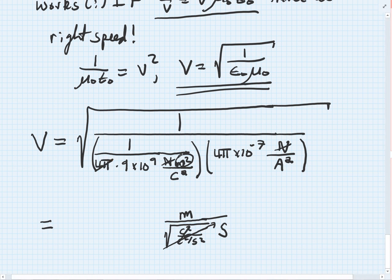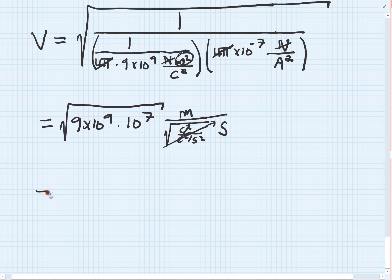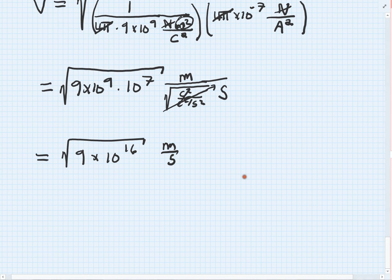Now, what speed is it? The 4 pi's cancel perfectly. That is good. The 9 times 10 to the ninth will do a double flip on top. So I'm going to have square root of 9 times 10 to the ninth. And then 10 to the minus seventh, when I invert that, gives me another factor of 10 to the seventh. So when I simplify this, I've got square root of 9 times 10 to the sixteenth in meters per second. Square root of 9 is 3. Square root of 10 to the 16 is 8. 3 times 10 to the eighth meters per second.